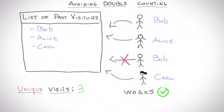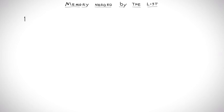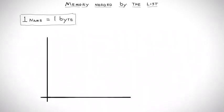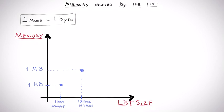This algorithm works, but it uses too much memory. Suppose each name takes only one byte of space. Then, we'd need around one kilobyte of space for a website with a thousand visitors. With a million visitors, we would need around a megabyte of memory. And for a billion visitors, we'd need around one gigabyte of space.